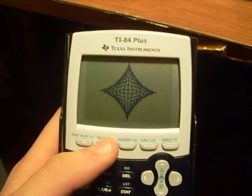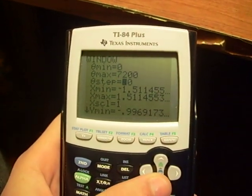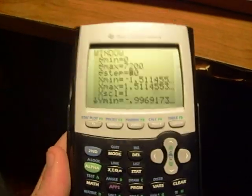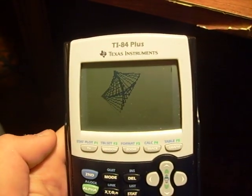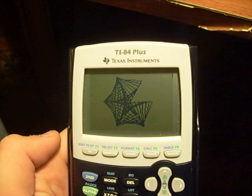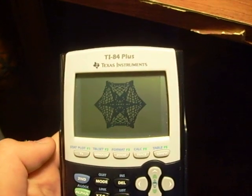Now to make cool stuff with this, you mess around with the theta step value. Change it, say it's at 90 now, change it to 60, hit graph, and you get this kind of spiderweb looking thing.